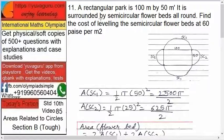Let's start. A rectangular park is 100 meters by 50 meters. It is surrounded by semicircular flower beds all around. Find the cost of leveling the semicircular flower beds at 60 paise per square meter.